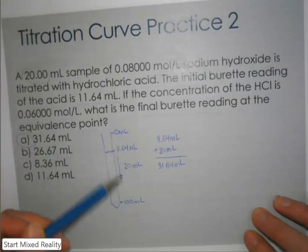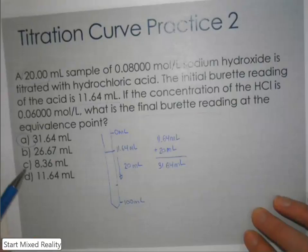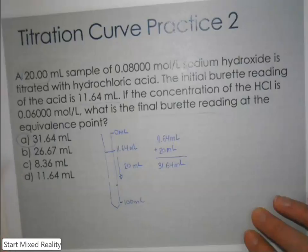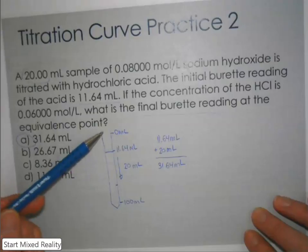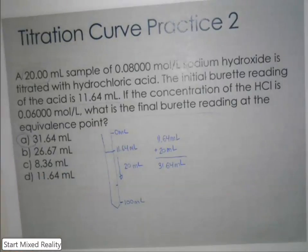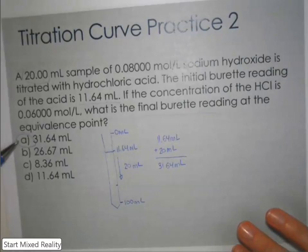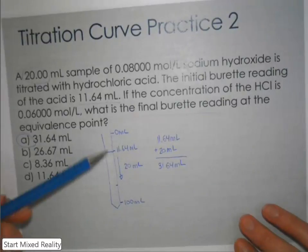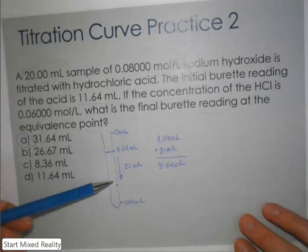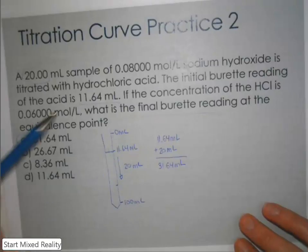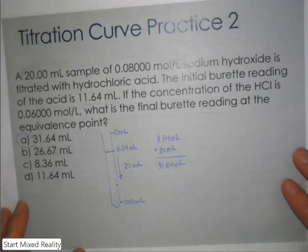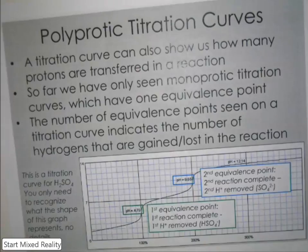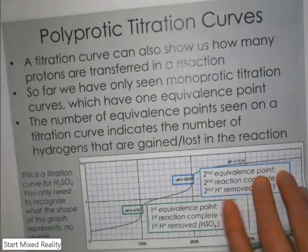Just remember you can't get a negative burette reading — that's why when you're doing an actual titration you always want to make sure you have plenty of volume in the burette, at least as much as you have of your sample, to ensure you won't run out.